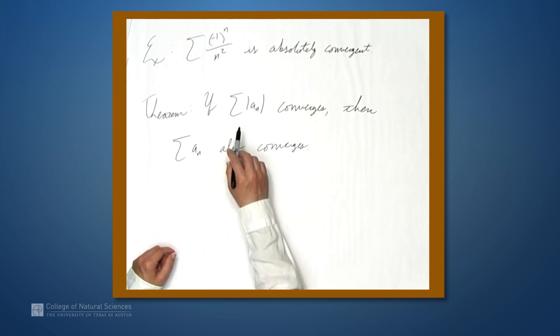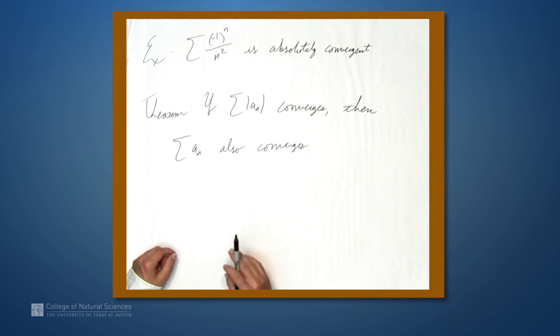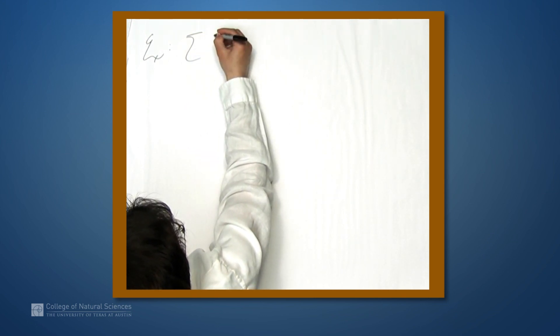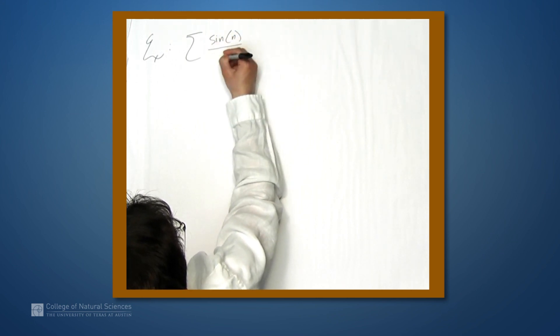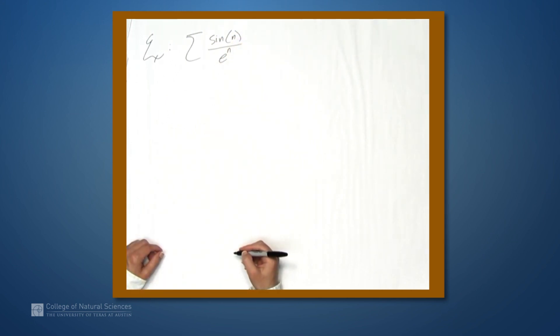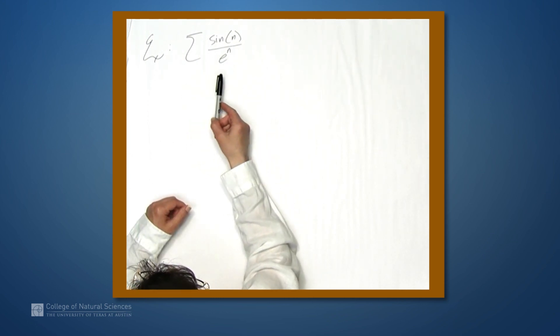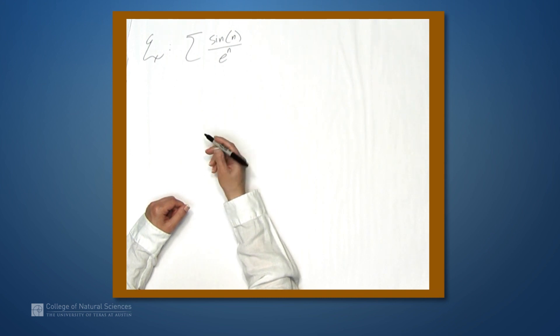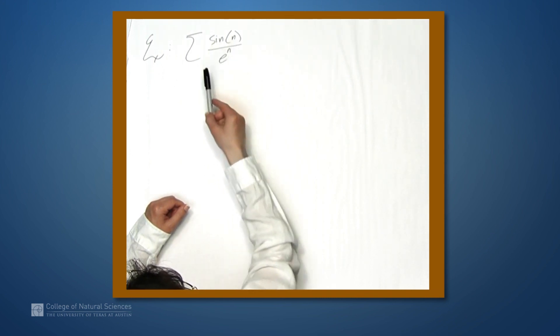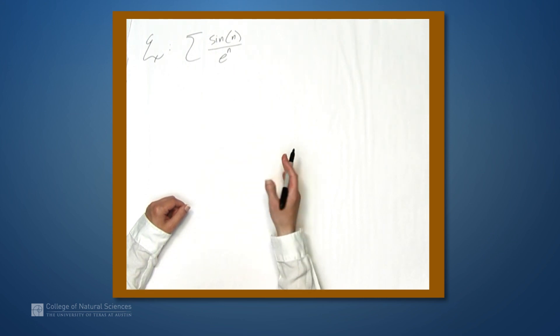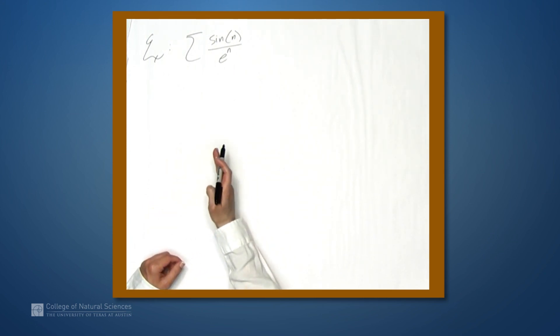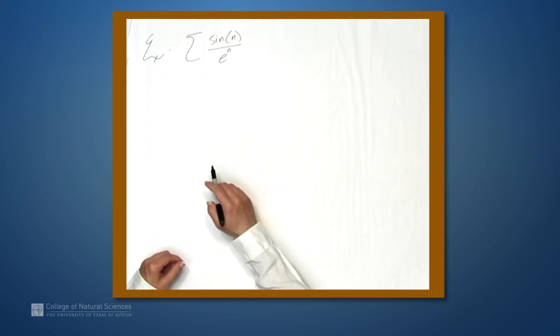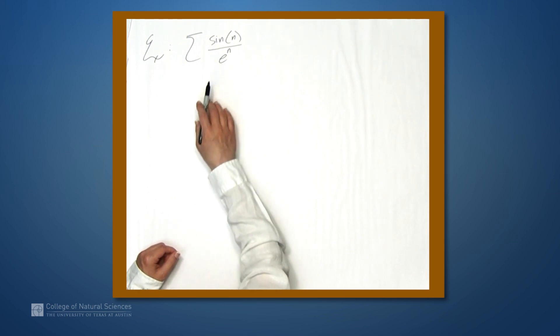Let's take a look at an example where this theorem comes in particularly handy, and we'll mention all the various theorems used along the way. Let's examine the series sin(n) over e^n. This series has terms that are both positive and negative, but they don't follow a particularly nice pattern because sin evaluated at integers isn't very well behaved. You'll have some positive terms, some negative terms, but not in a strict alternating pattern, so you cannot use the alternating series test on this series.